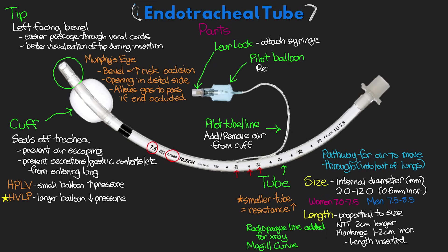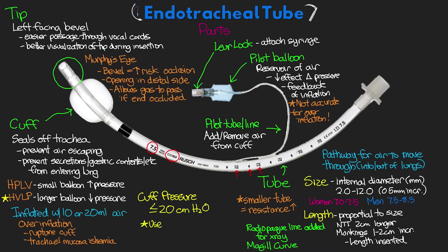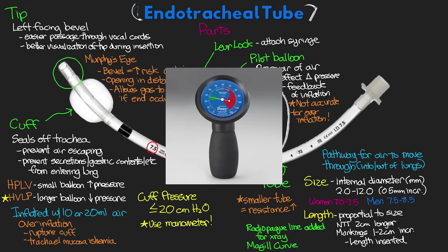The pilot balloon is a reservoir of air that helps reduce the effects of minor changes in tracheal pressure and gives tactile feedback for whether the cuff is inflated during use or deflated prior to extubation. That said, the pilot balloon is not an accurate measure of overinflation — it will only tell you if there's not enough air if it feels too soft. Cuffs are generally inflated with 10 to 20 mLs of air. Overinflation can result in rupture of the cuff, requiring replacement of the ET tube, or tracheal mucosa ischemia — essentially a pressure injury of the trachea — especially over long periods. To help prevent this, cuff pressure should be 20 centimeters of water or less, and a manometer should be used to accurately measure cuff pressure rather than just feeling the pilot balloon.